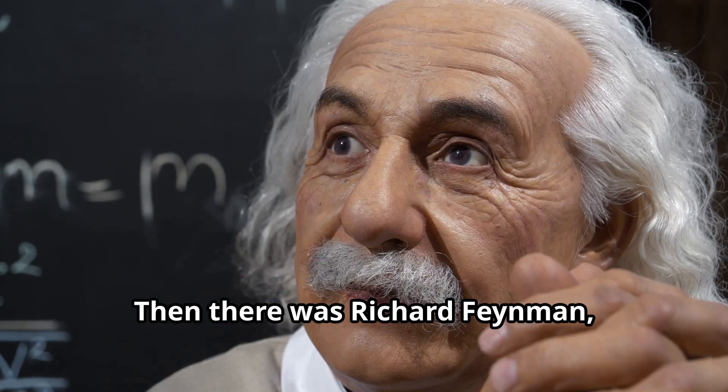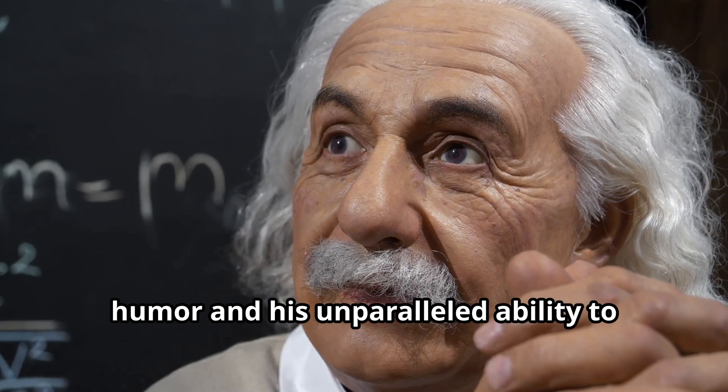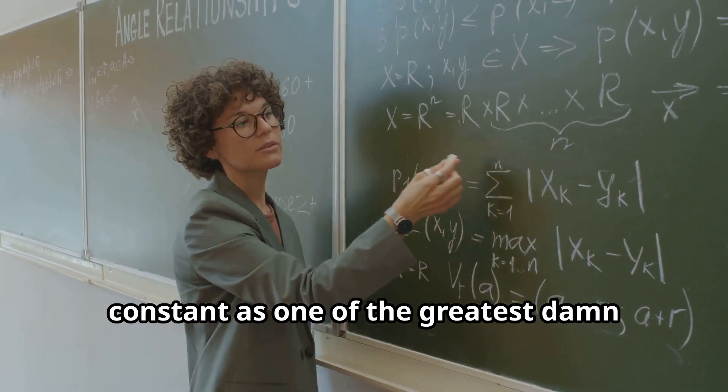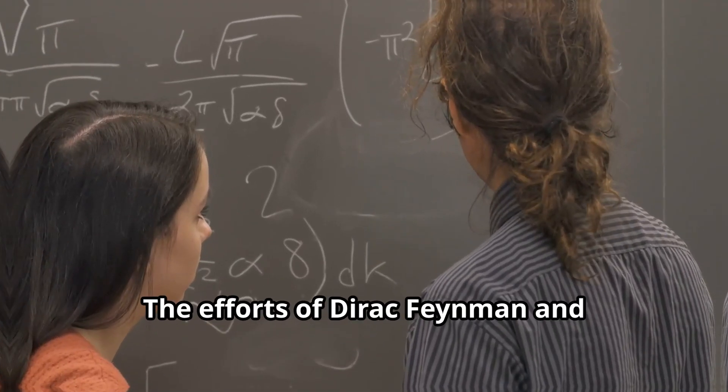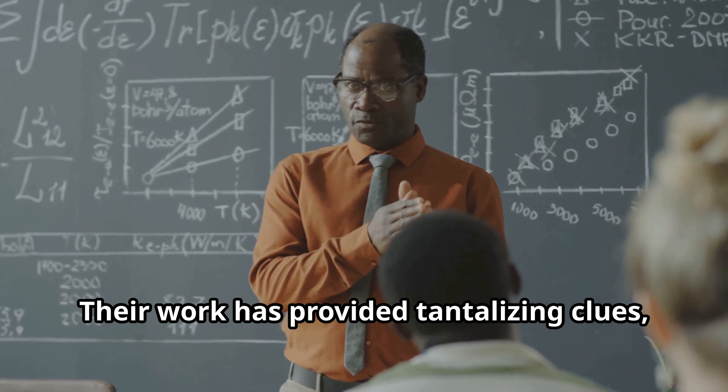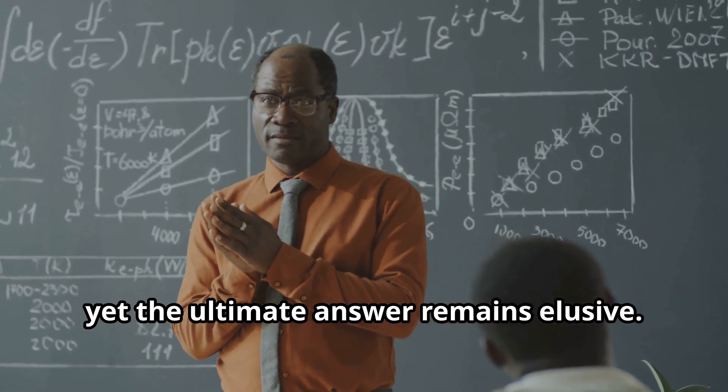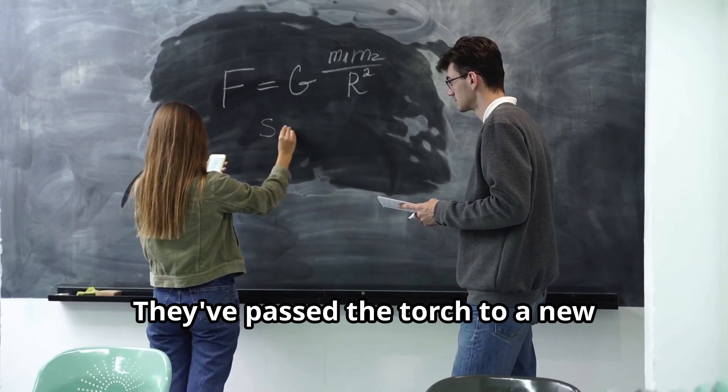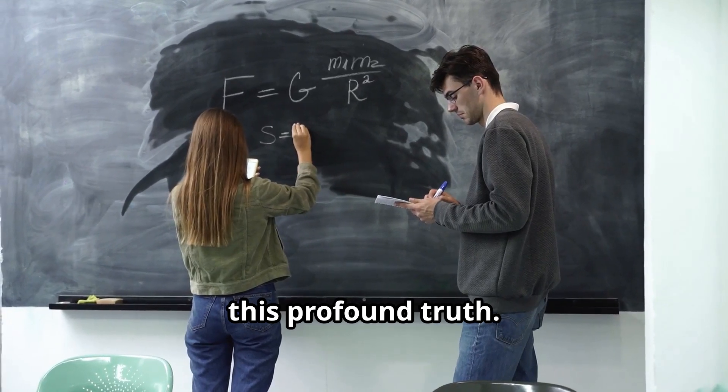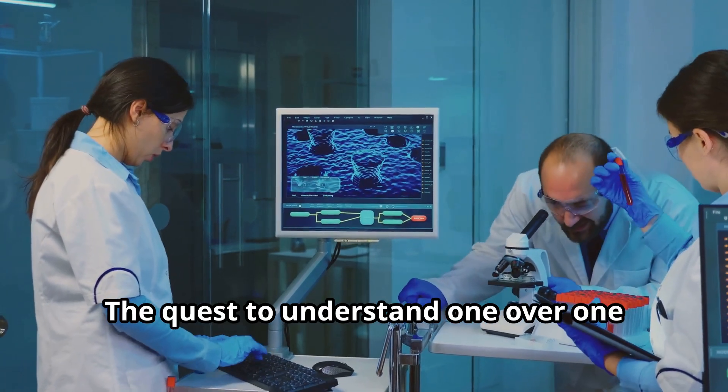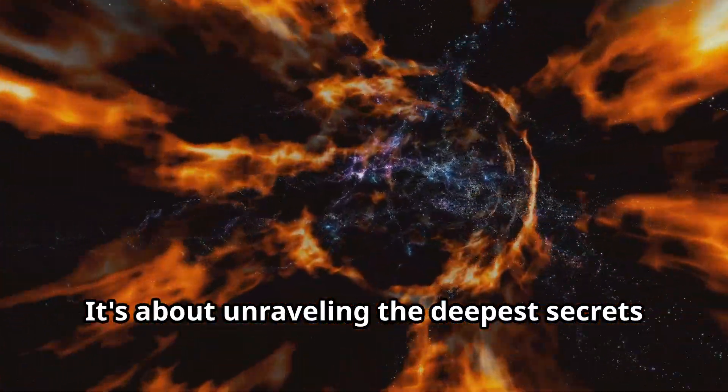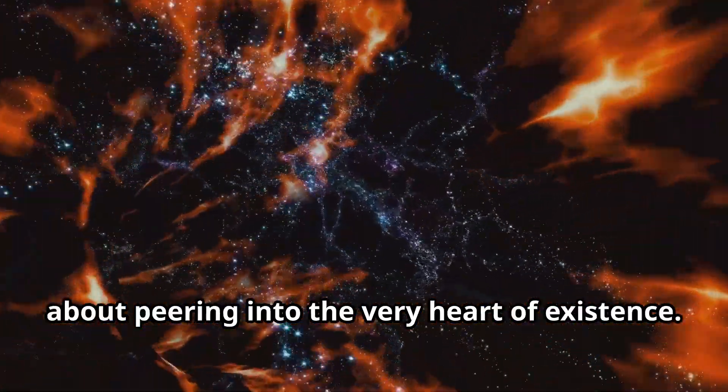Then there was Richard Feynman, a Nobel laureate renowned for his quirky humor and his unparalleled ability to explain complex ideas. Feynman described the fine structure constant as one of the greatest damn mysteries of physics. The efforts of Dirac, Feynman, and countless others have pushed the boundaries of our understanding. Their work has provided tantalizing clues, yet the ultimate answer remains elusive. They've passed the torch to a new generation of physicists, urging them to continue the pursuit of this profound truth. The quest to understand 1 over 137 isn't just about satisfying our curiosity. It's about unraveling the deepest secrets of the universe, about peering into the very heart of existence.